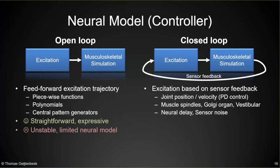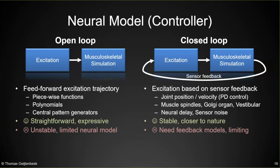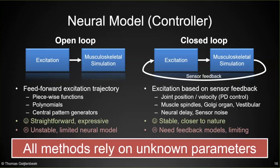Advantages of closed loop control are that they can be stable even in new scenarios because excitation is based on the current state, and they can give us additional insights on how feedback systems work in nature. The main downside is that you need to model these feedback systems, and that can be a limiting factor to the behavior you can achieve. The main challenge with any model is that they rely on a lot of unknown parameters, and the key in any control problem is finding the right parameters for your control system.